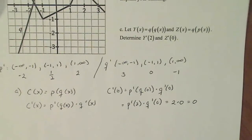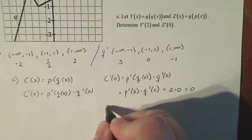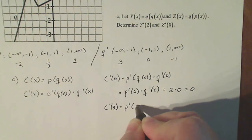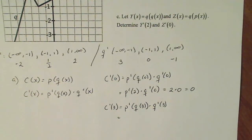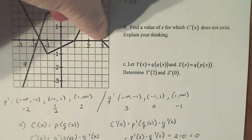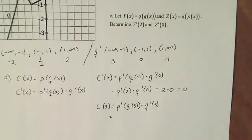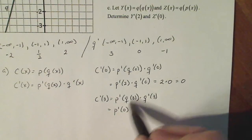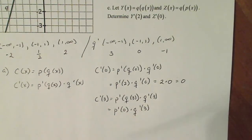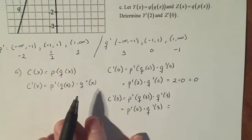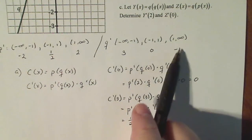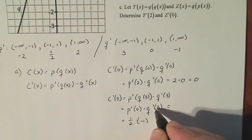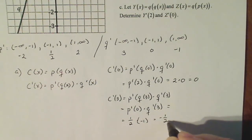Now c prime of three equals p prime of q of three times q prime of three. Starting with the interior, q of three is zero — so we need p prime of zero times q prime of three. Try not to anticipate; follow the directions and move forward. P prime of zero: zero is in the interval minus one to one, so the derivative is one half. Q prime of three: three falls in the interval one to infinity, so the derivative is minus one. So c prime of three is minus one half.